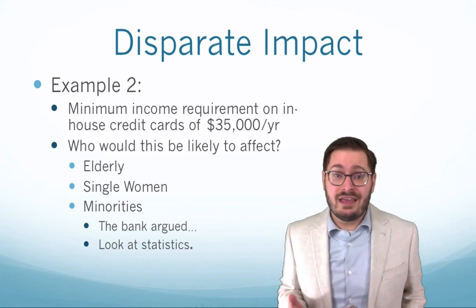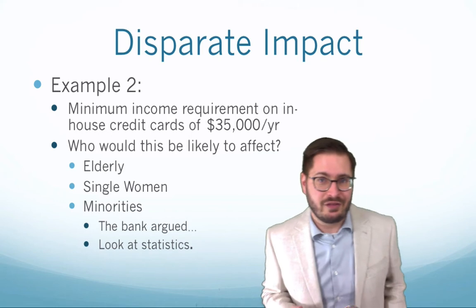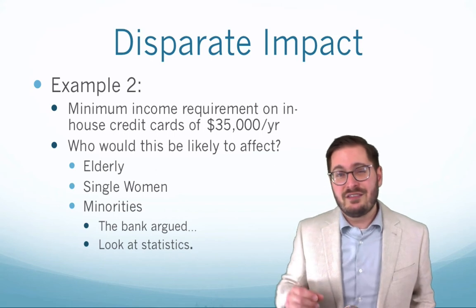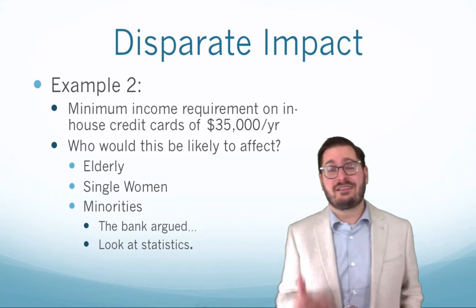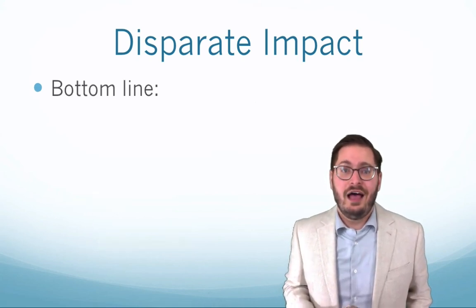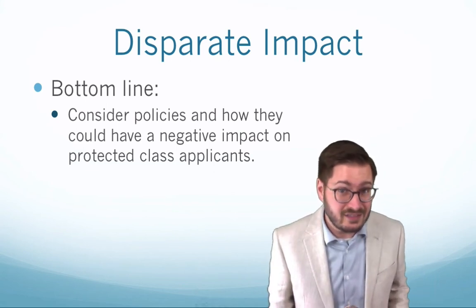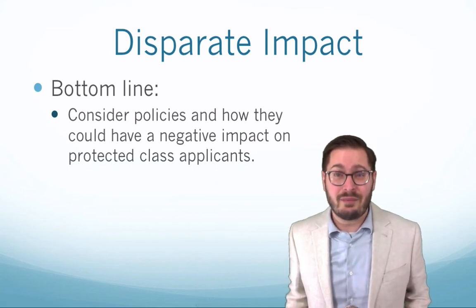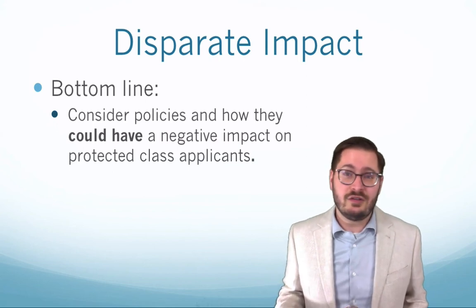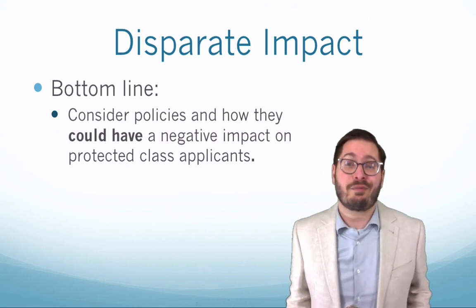The bank argued this, but when we looked at their statistics, it was very problematic for them. You have to be careful on how you set your policies, because if they inadvertently affect a protected class, you could have a discrimination because of disparate impact on your hands. Consider your policies and how they could have a negative impact on protected class applicants. You have to play devil's advocate when reviewing policies, because your examiners are going to do this, and over time, if you do have a negative impact, you're going to end up with discrimination, and that's going to be a problem all around.